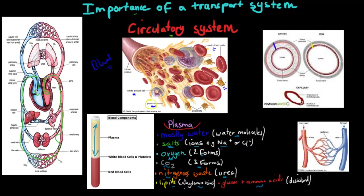So plasma carries all these different types of nutrients which need to get to and from cells, and they will change as the blood moves past different parts of the body. For example, oxygen goes into the actual blood at the lungs, whereas carbon dioxide leaves the blood at the lungs. Whereas at the cells, carbon dioxide enters the blood and oxygen leaves the blood.